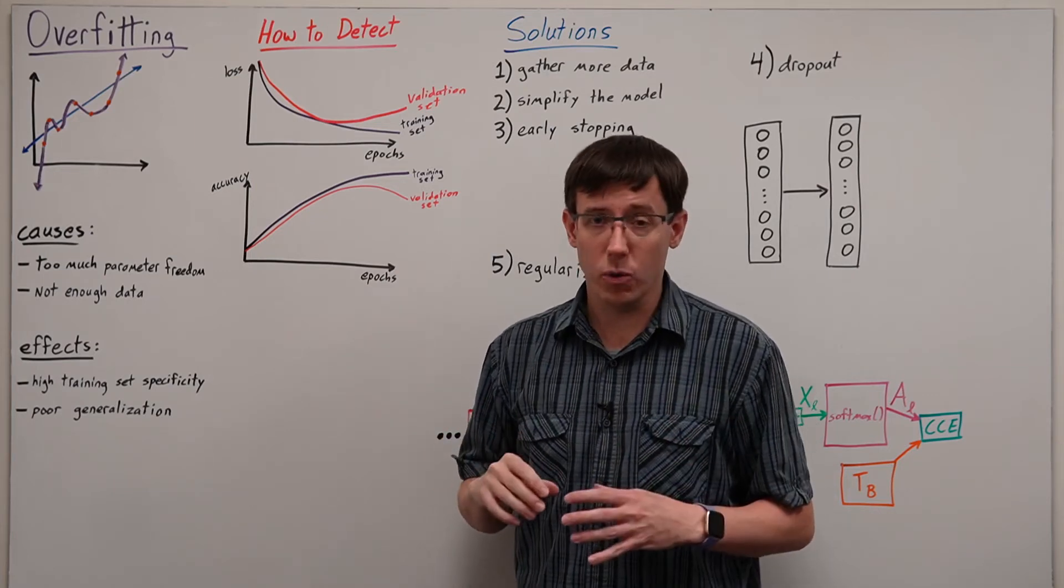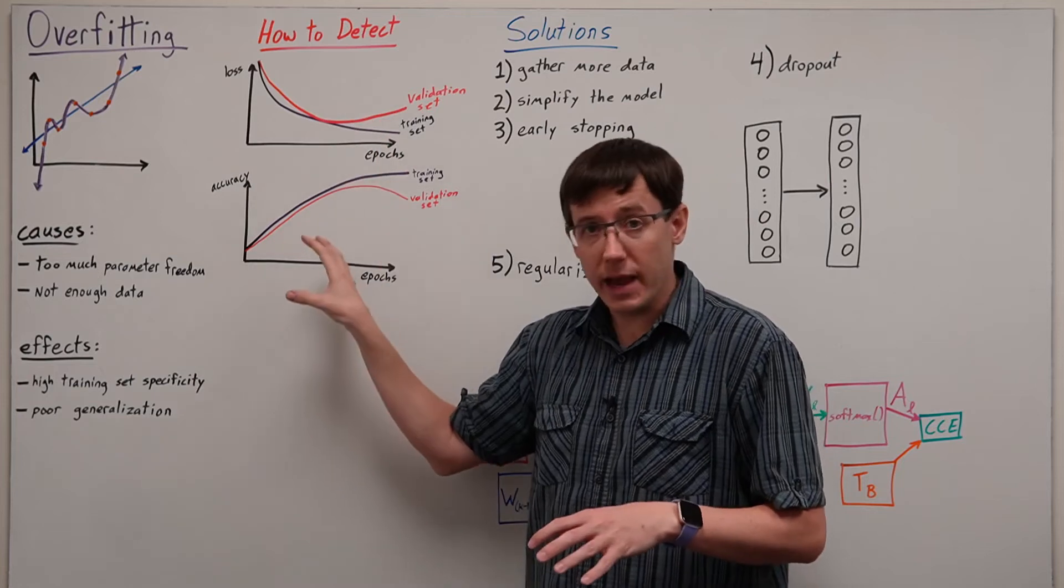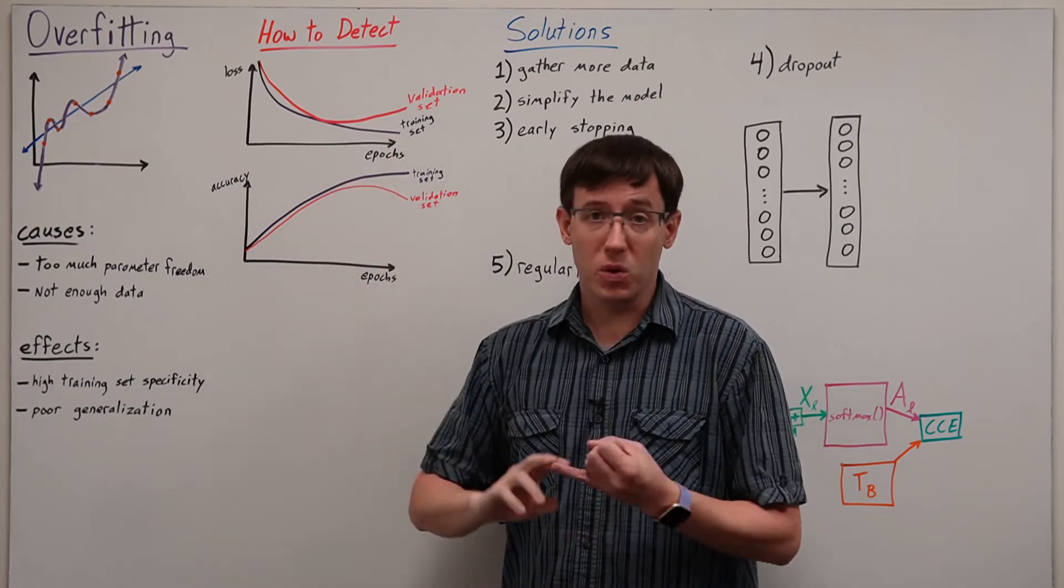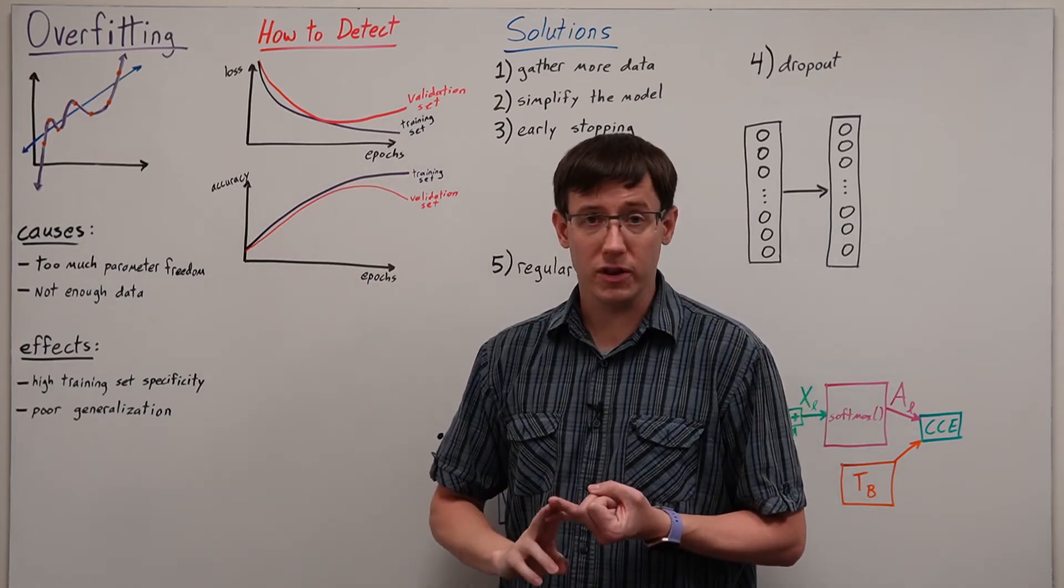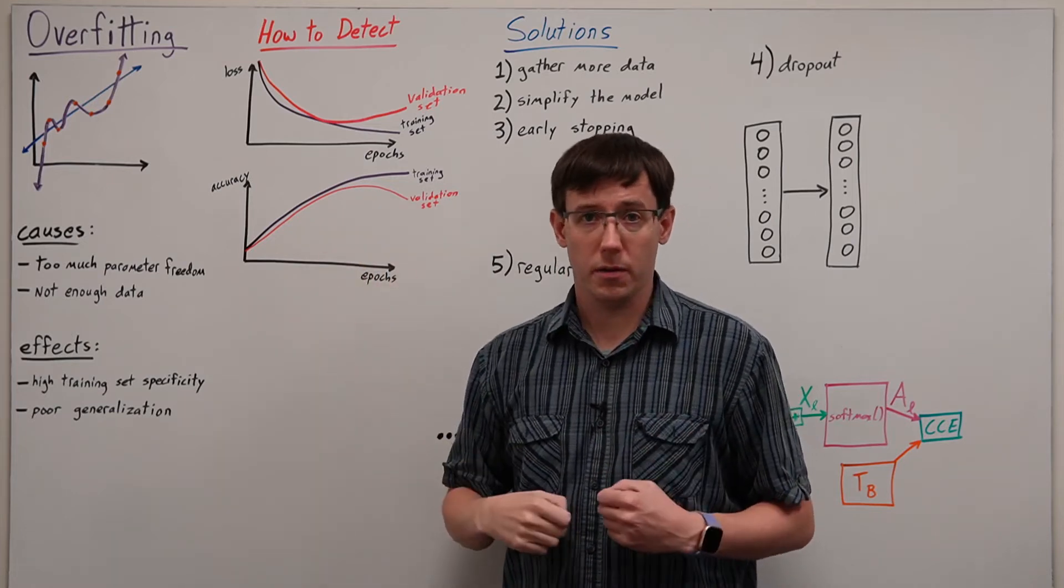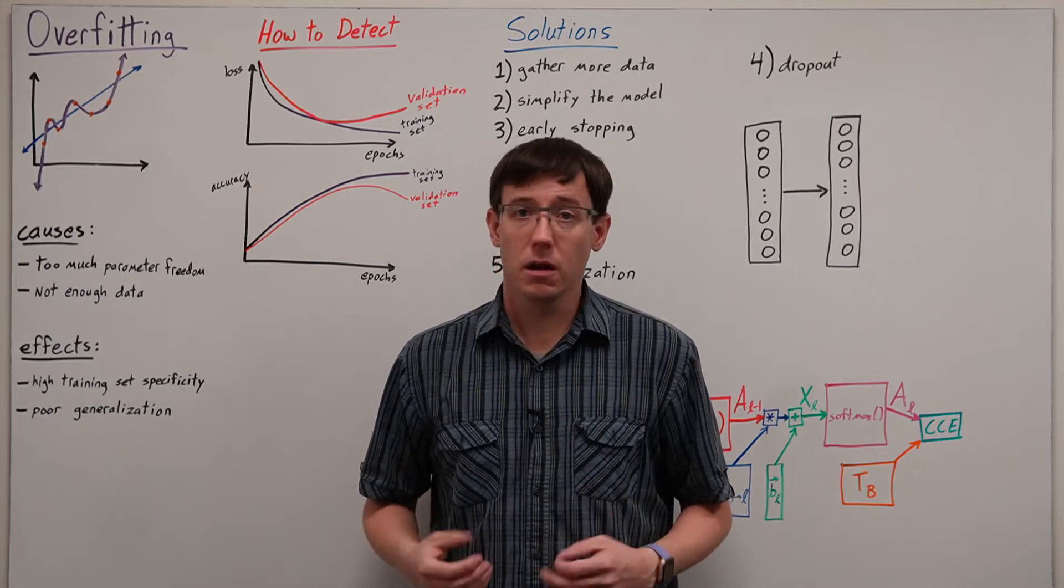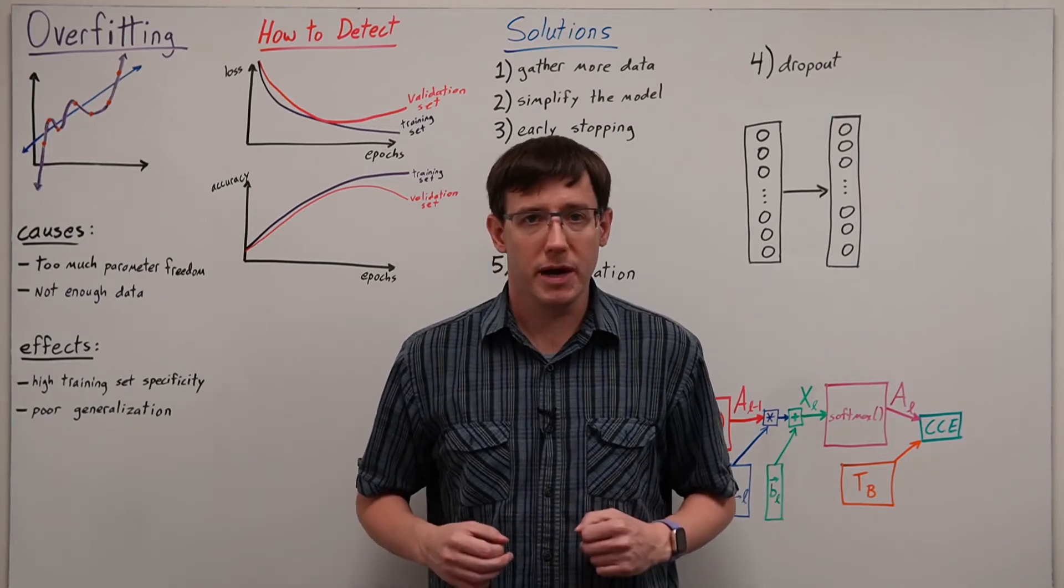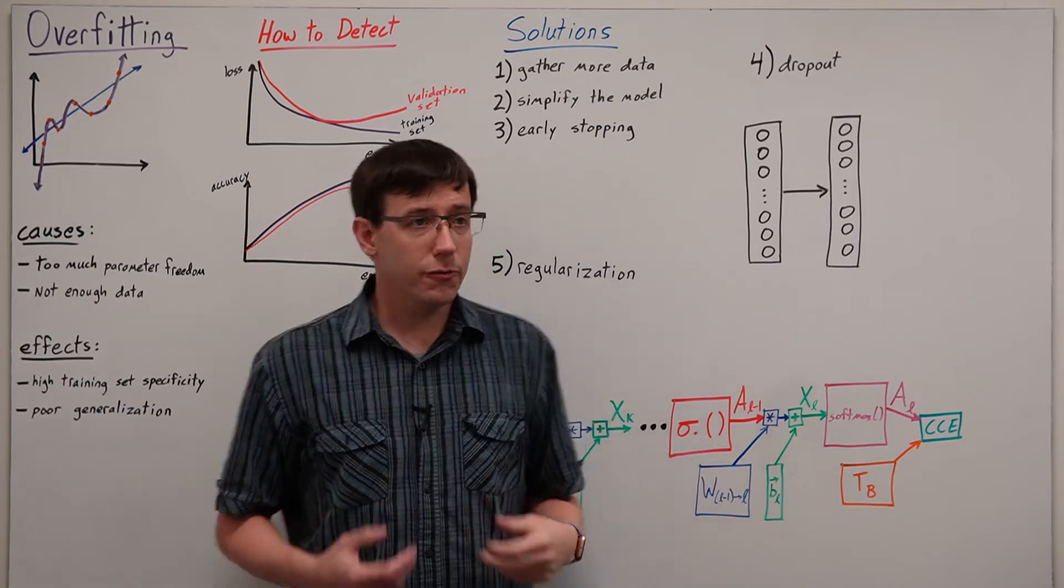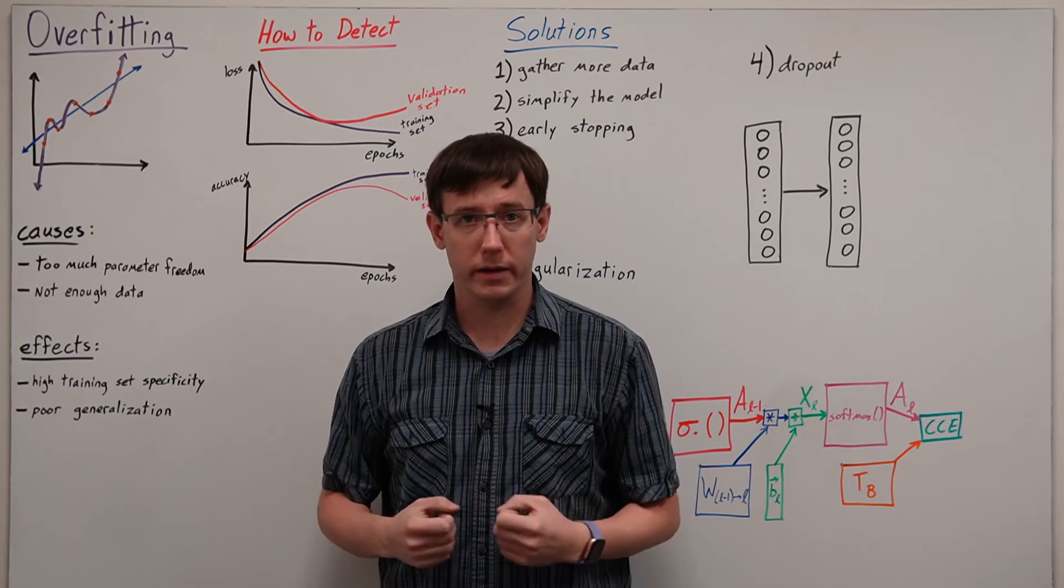So whenever you're training a neural network, you should be keeping an eye on the loss and or the accuracy on both the training set and the validation set so that you can identify if the network is overfitting. But if we think that our network might be overfitting, what sorts of things can we do about it? Well, our first two options are to address the causes of overfitting directly.